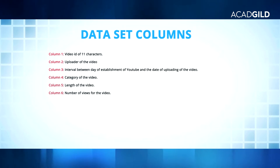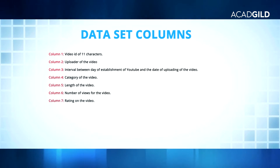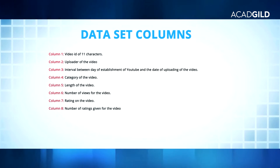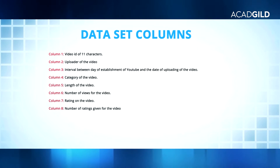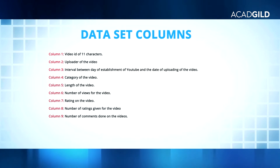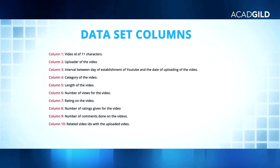Column 5 gives information about the length of the video. Column 6 states the number of views for the video. Column 7 gives the rating for the video. Column 8 gives the number of ratings received for the video. Column 9 gives the number of comments received for the video. Column 10 gives related video IDs for the video uploaded.